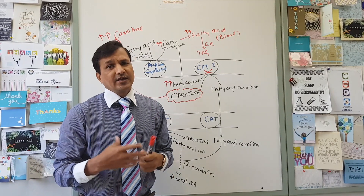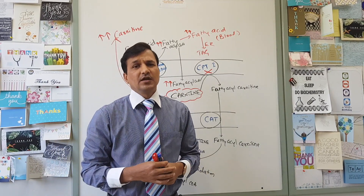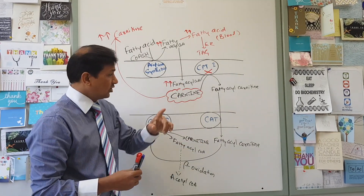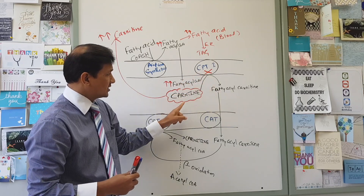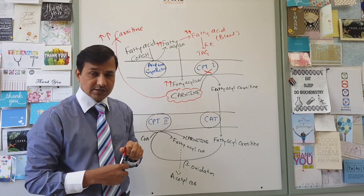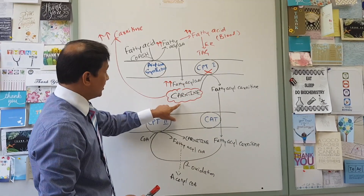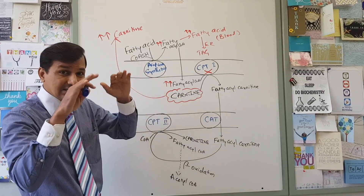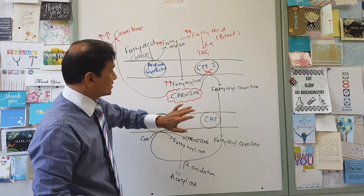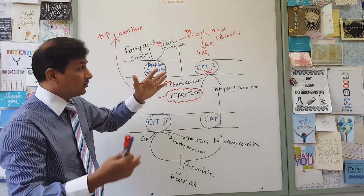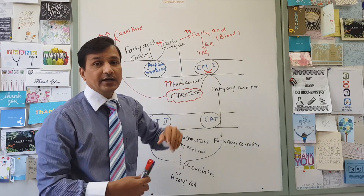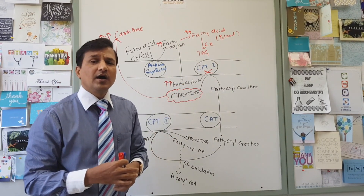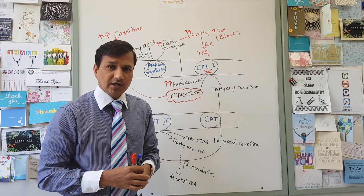Hypoglycemia signs like seizures and tremors can be seen in CPT1 deficiency. The difference between CPT1 deficiency and primary carnitine deficiency is: in carnitine deficiency, carnitine levels are low in the blood, whereas in CPT1 deficiency, carnitine levels are high in the blood — along with elevated long chain fatty acids and hypoketotic hypoglycemia.